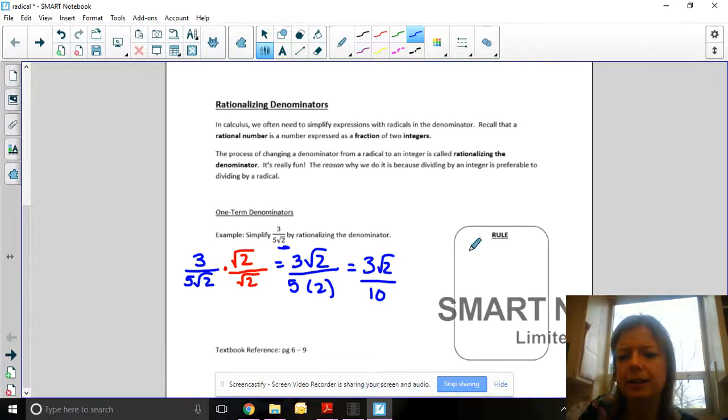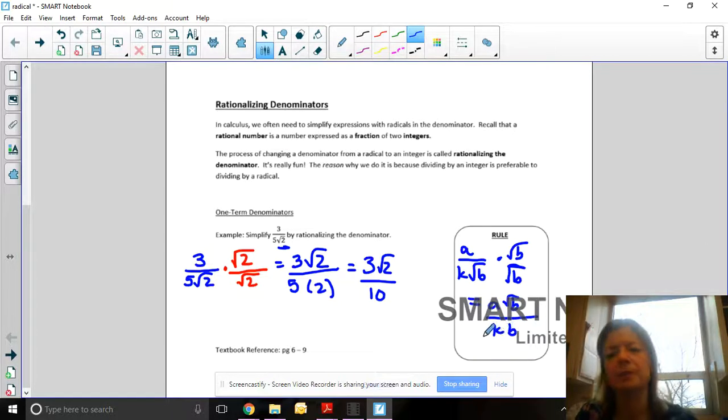The rule is, if I have A over K times root B, I want to multiply it by root B over root B. And then I'm left with A root B divided by KB.